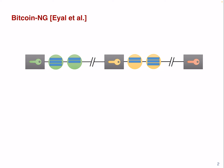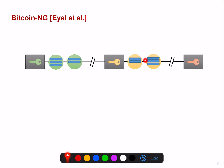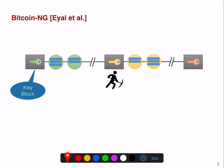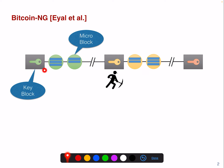The authors propose to still have a chain — you can see here this is still like a chain of blocks — but now we have different types of blocks. We have a so-called key block and so-called micro blocks. The key block is the one that is found through proof of work and it elects a leader. This particular leader can then create micro blocks, which are basically just signed data blocks of transactions from the elected leader.